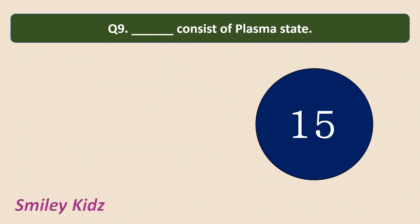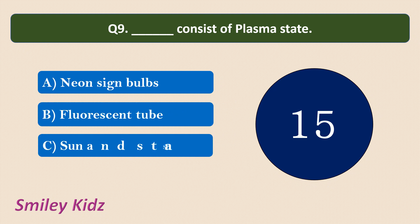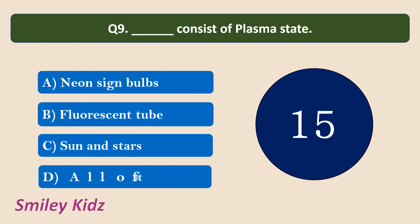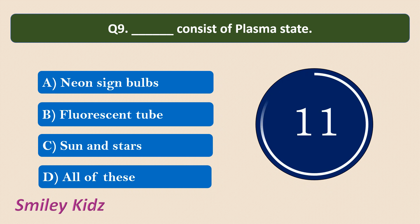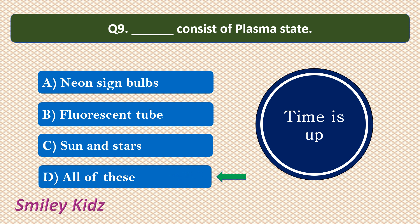Question number 9: Which consists of plasma state? Options are: Neon sign bulbs, Fluorescent tube, Sun and stars, All of these. Your time starts now. Your time is up. Neon sign bulbs, fluorescent tube, and sun and stars all consist of plasma state. So the answer is All of these.